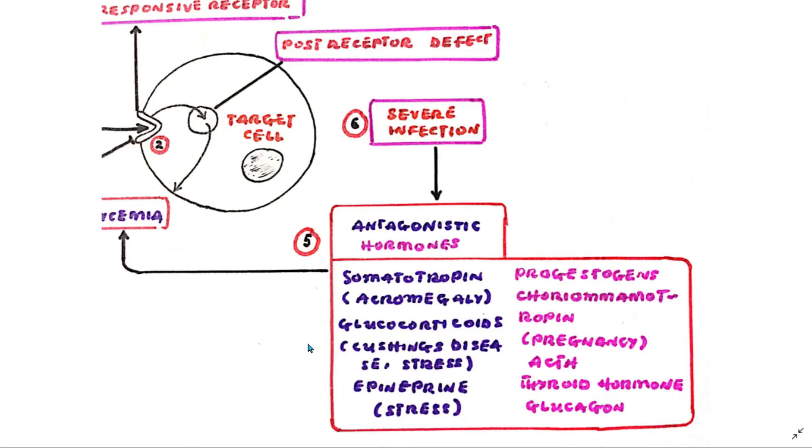Epinephrine release could also trigger the development of diabetes mellitus. Progesterogens and choriomamotropins in pregnancy could also trigger diabetes mellitus. However, this should be resolved after delivering the baby or after the end of pregnancy. Also, ACTH could trigger the development of diabetes mellitus, as well as thyroid hormones and glucagon.